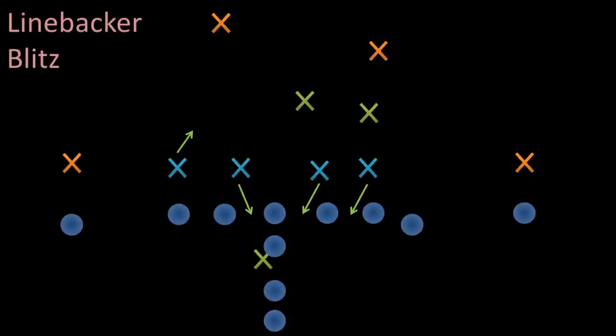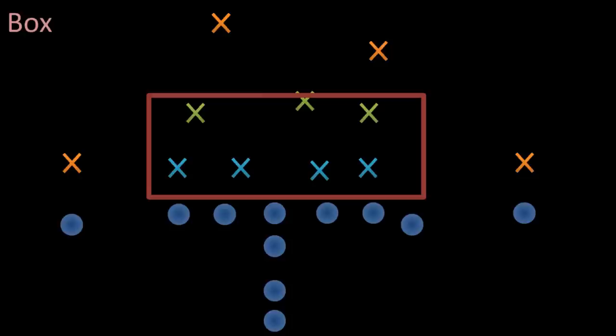One final defensive term to explain is the box. This refers to the general area that is about as wide as the offensive line and about 5 yards deep into the defense. In most formations, the linemen and the linebackers will be said to be in the box, so that makes 7 guys.